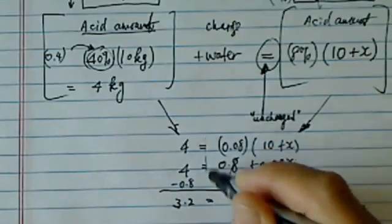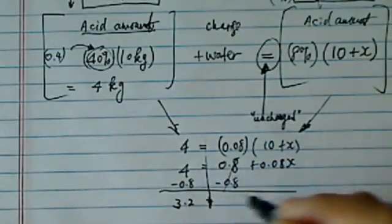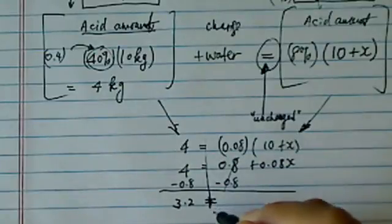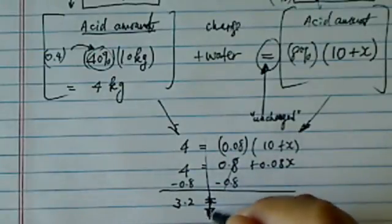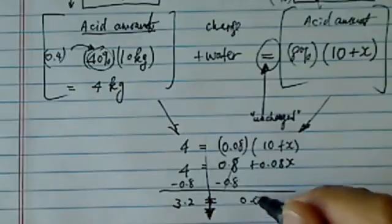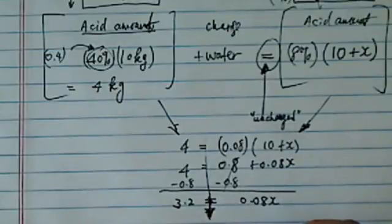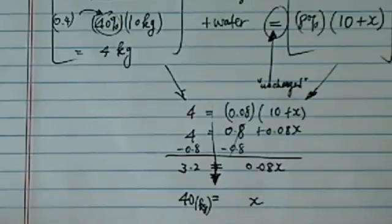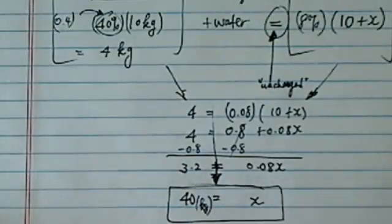Look, I'm very careful lining up all my equal signs, is equal to 0.08X. Solving for X is equal to 40, so kilograms here. So basically we have to add 40 kilograms of water, and that's the final answer.